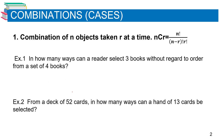Example number one: In how many ways can a reader select three books without regard to order from a set of four books? If we compute manually, our four books are A, B, C, and D. We are going to select three at a time. The first selection is A, B, and C.